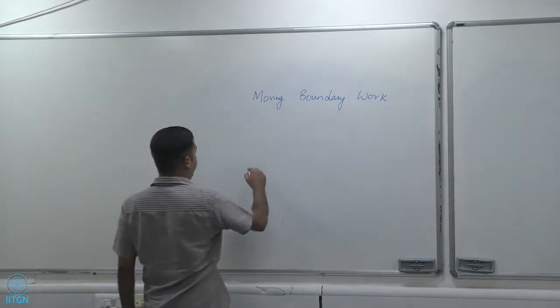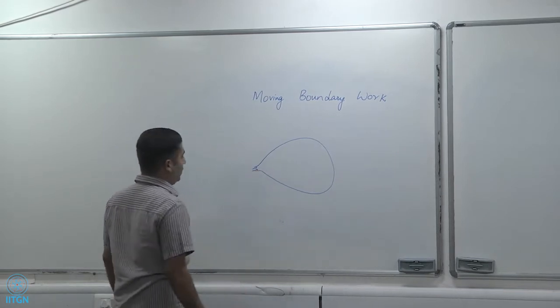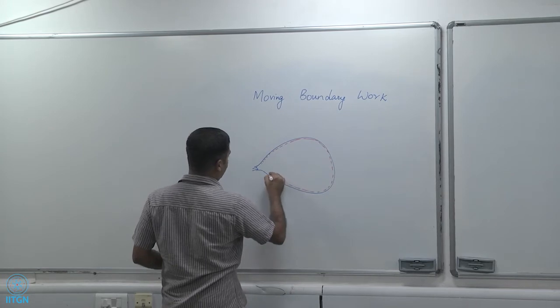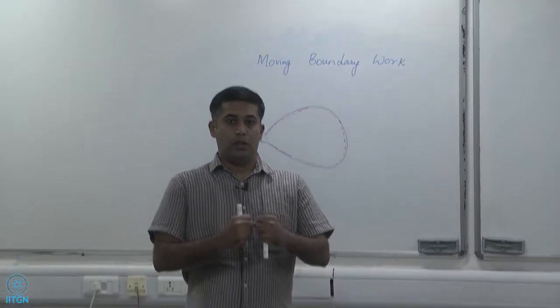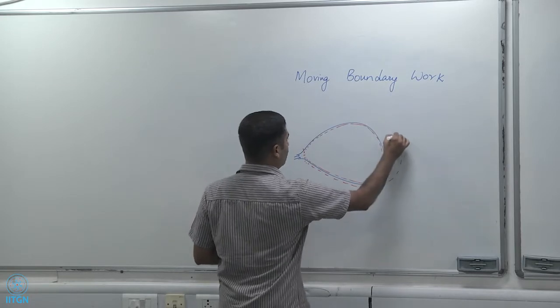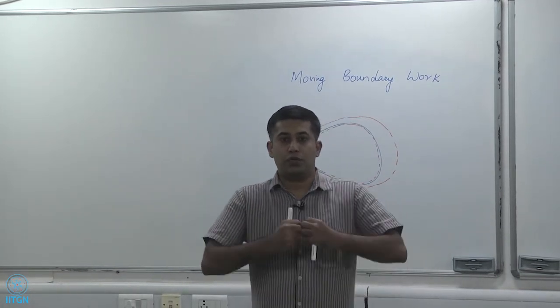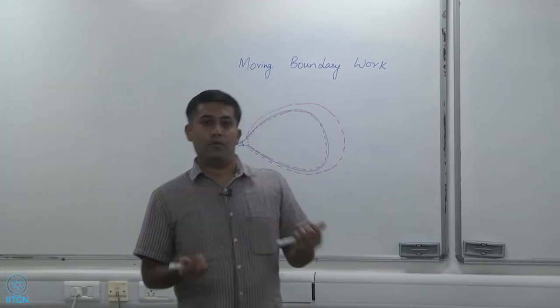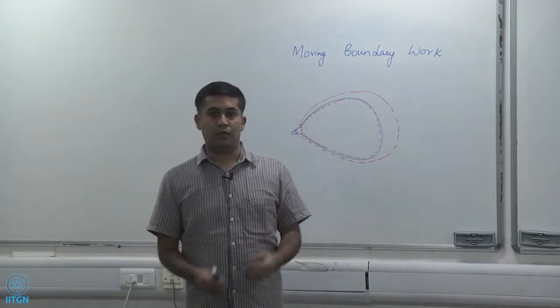We all know that when we have a balloon and try to inflate it, assuming I take this as my system, the air pushes the balloon out. The system has pushed the atmosphere out, so it must have done some work on the atmosphere. The system has done some work on the surroundings. But this is an example of an open system because air is entering the system when I am trying to blow a balloon.